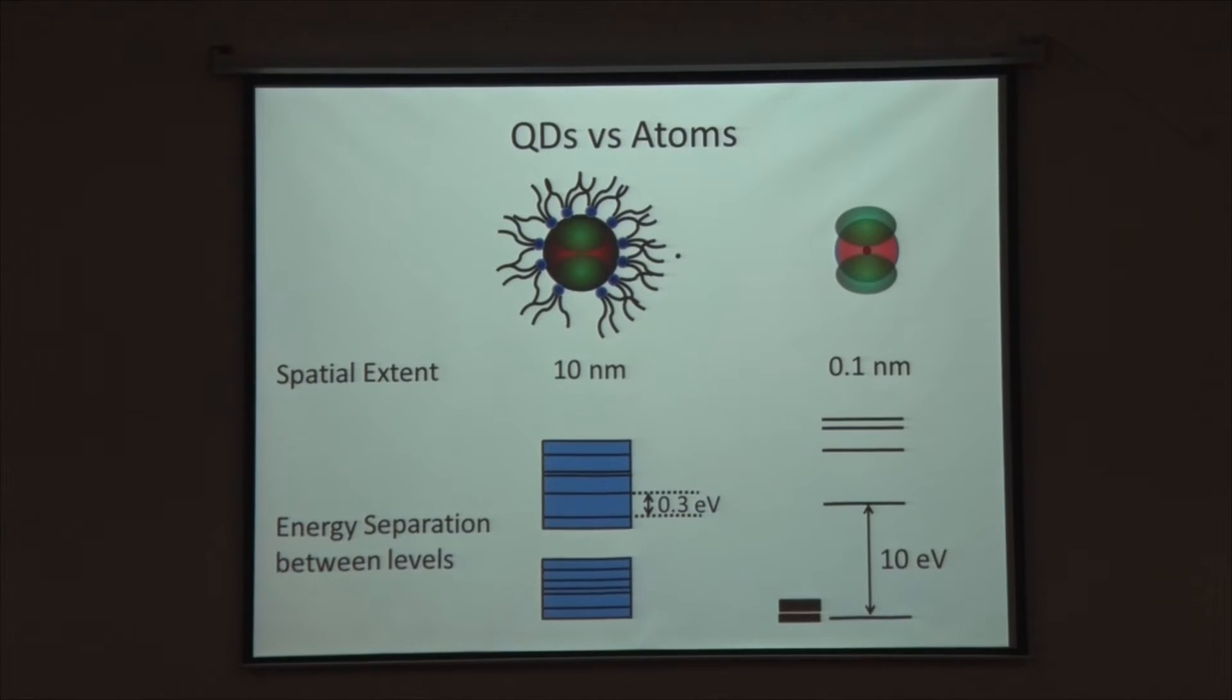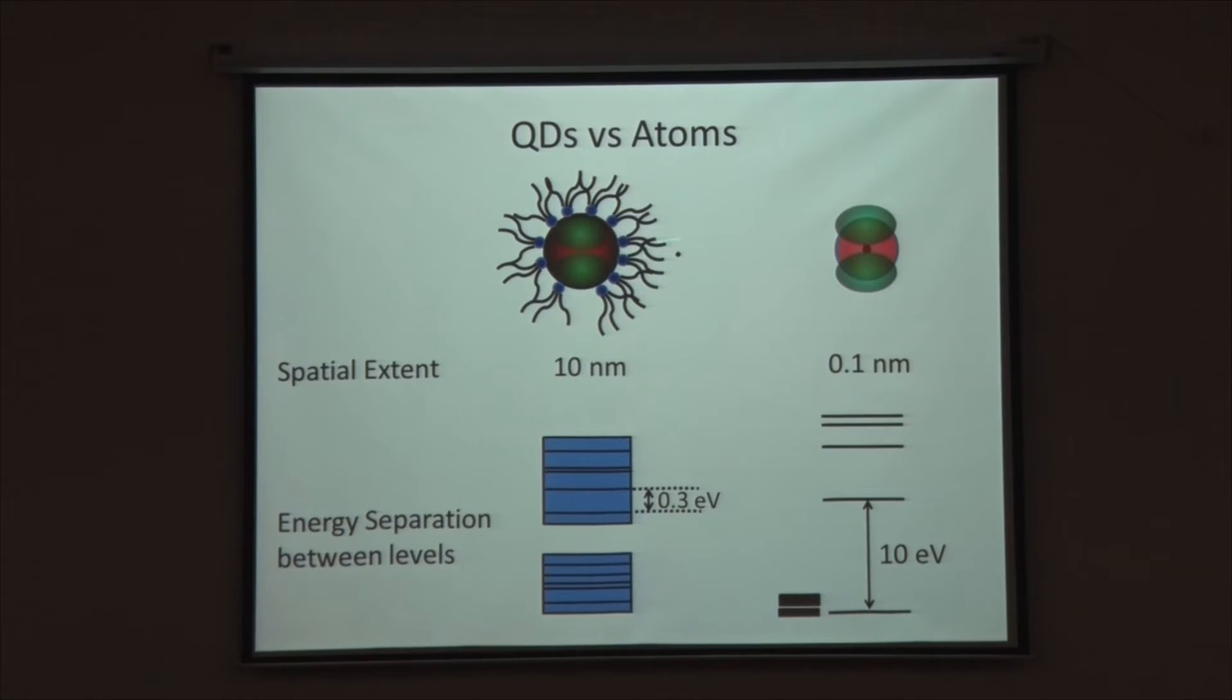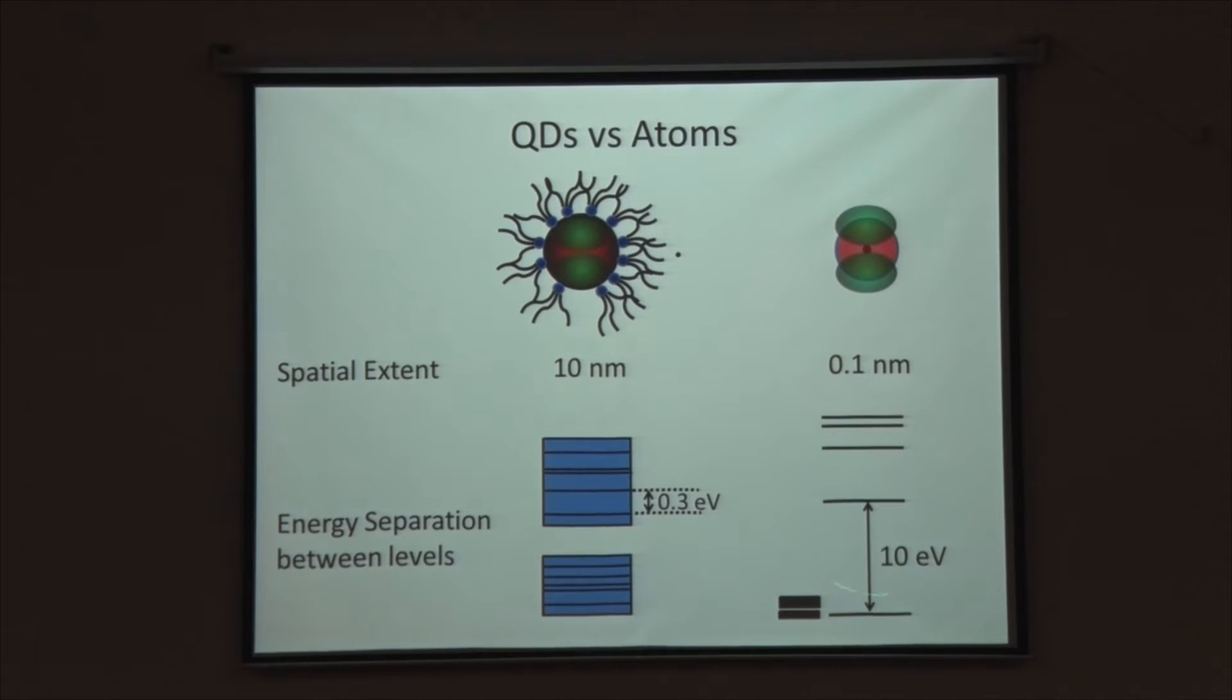If we try to summarize the similarities and differences between quantum dots and atoms: quantum dots are large, around 10 nanometers in diameter as compared to atoms which are 100 times smaller. At the same time, the energy level spread of quantum dots is really tiny. Quantum dot energy levels are roughly 0.3 eV apart in the maximum case, while in the case of atoms we are dealing with levels which are 10 eV or more apart. An atom resembles a dot when compared to a quantum dot, and the energy levels of a quantum dot look like thick lines when compared to the energy levels of an atom.